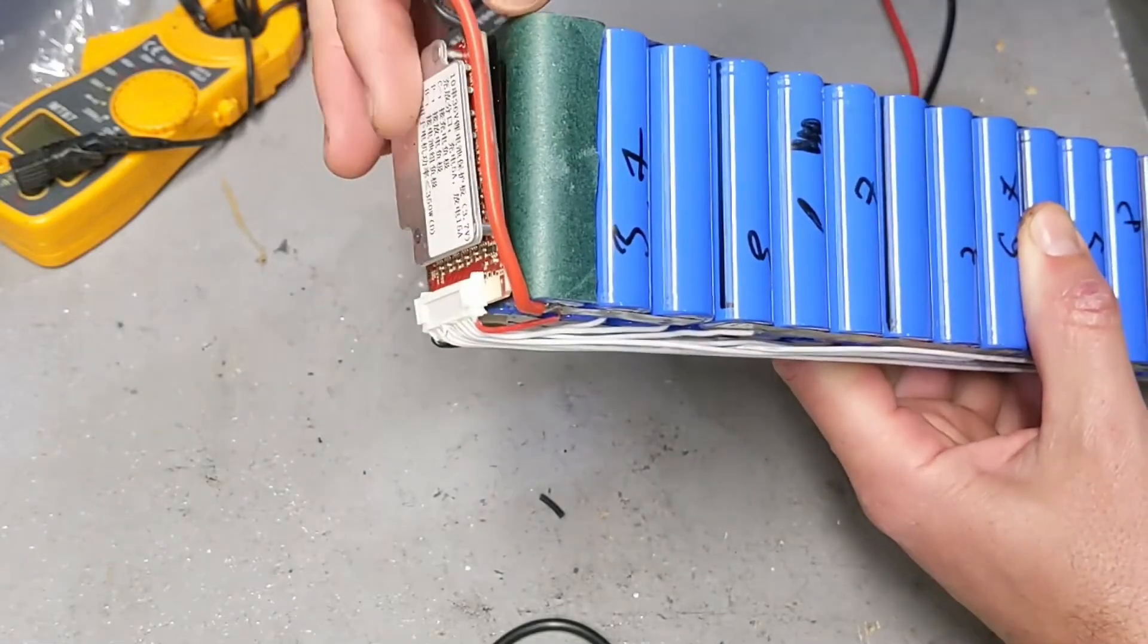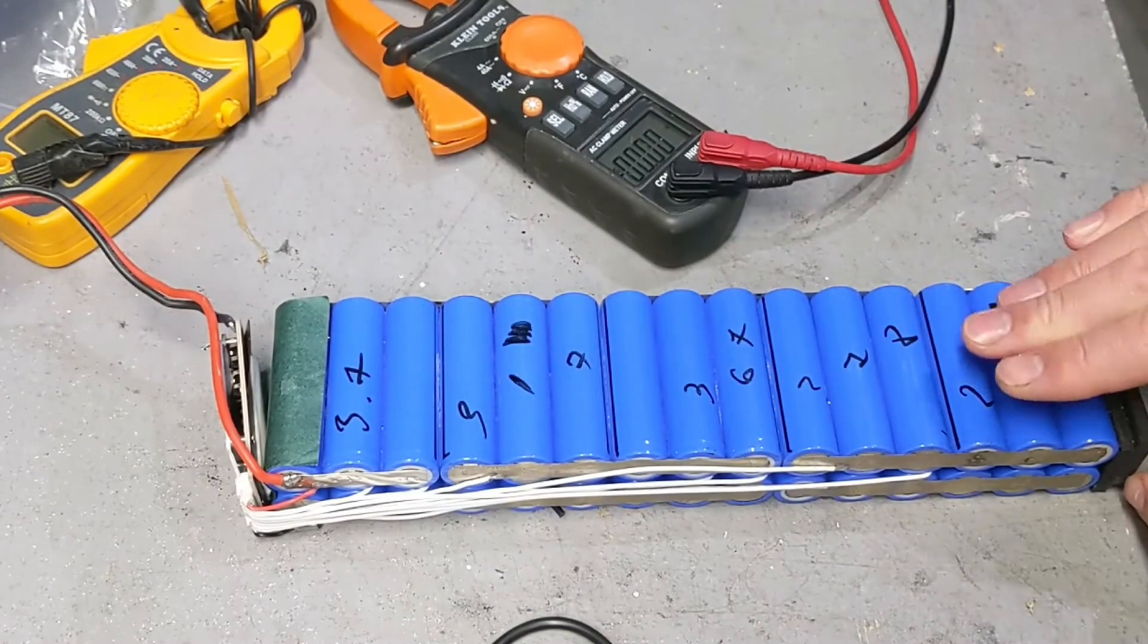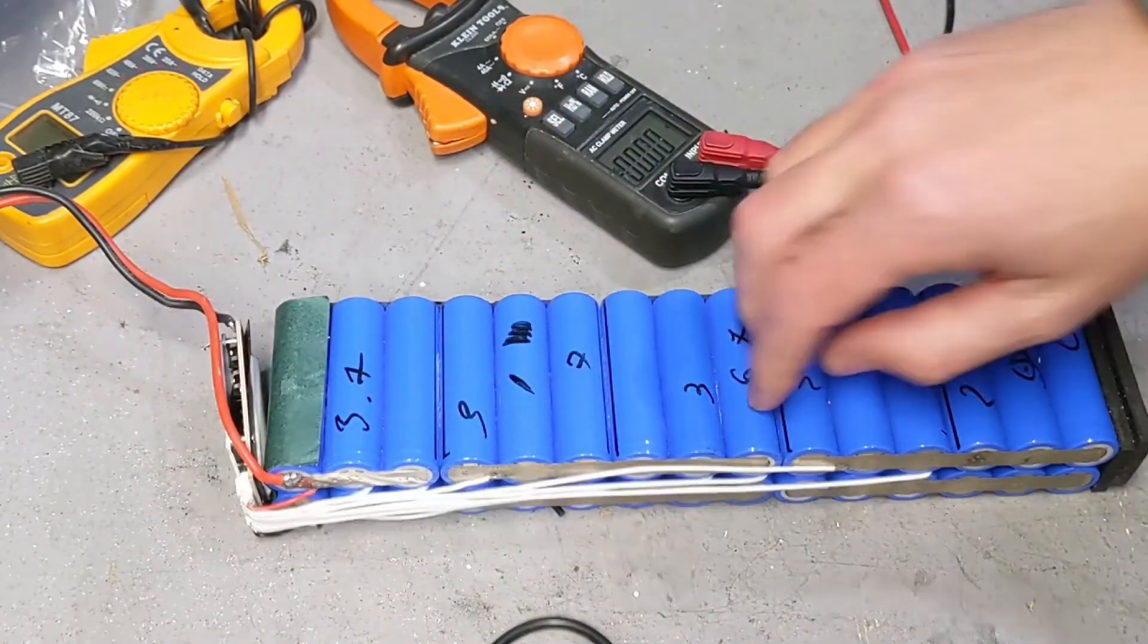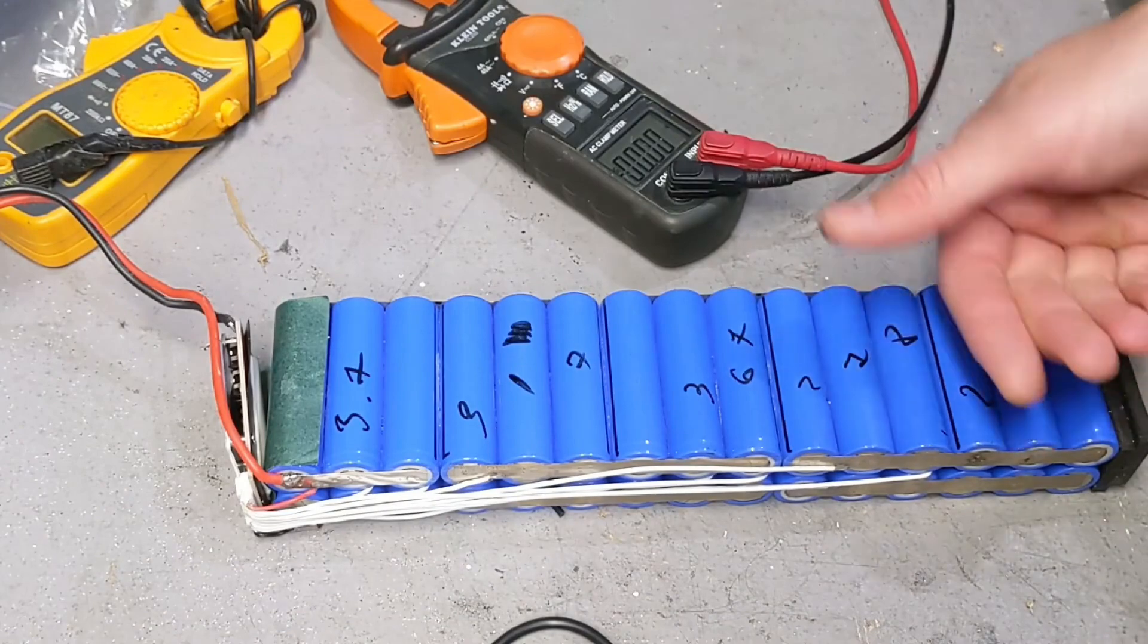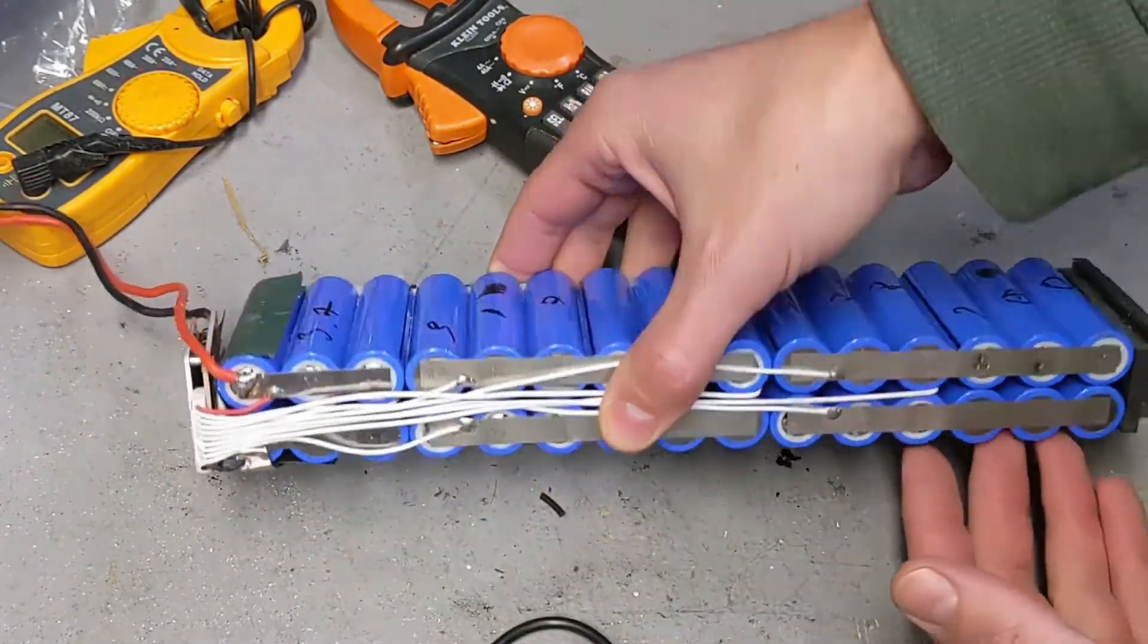How does it do that? The positive is hooked up over here and the negative is with the BMS itself. Once it senses that one of these cells has dropped its voltage too low, it will automatically cut off the entire battery. So you could have just one bad cell in here that is causing the issue and you could have a perfectly good battery with perfectly good cells, but it's just not working properly.